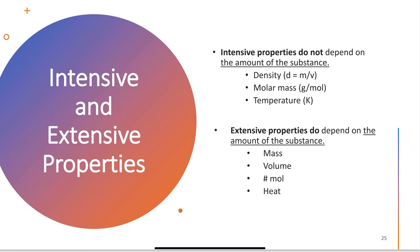An intensive property is something completely independent of the amount of substance present. Density, for example, is an intensive property. Density is calculated as mass over volume — as I increase the mass of a substance, its volume also increases. So density doesn't matter how much I have; it's a great way to identify what a substance is.